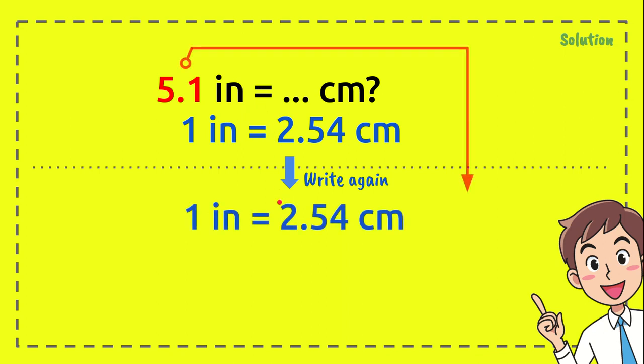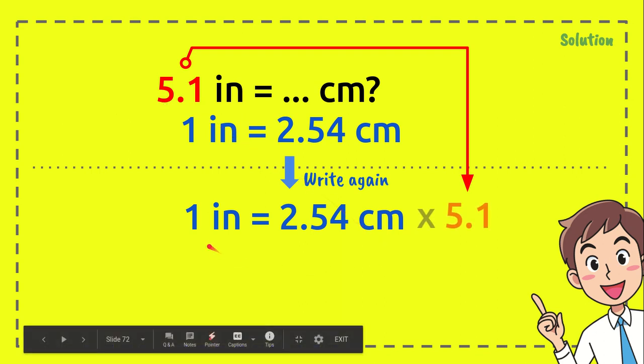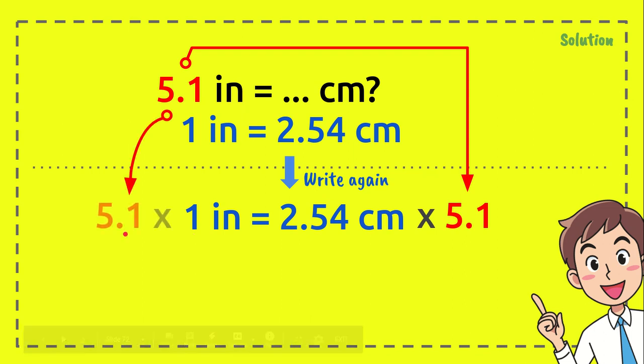And followed by the multiplication between 2.54 and 5.1. And after that we need to multiply 1 inch with 5.1 as well. Now, 5.1 times 1 inch equals, of course, 5.1 inches.